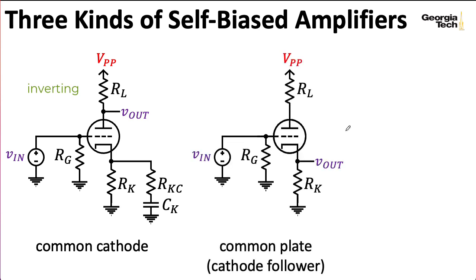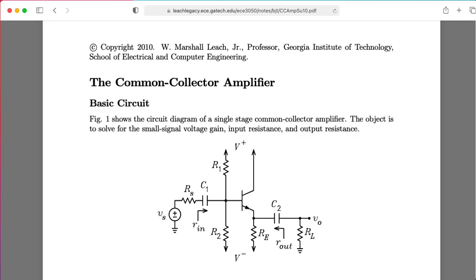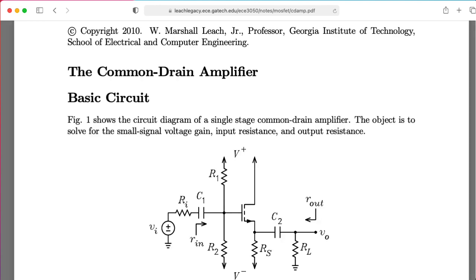The common plate configuration, on the other hand, doesn't give you a ton of gain. In fact, it doesn't really give you gain at all. It's going to give you a gain factor that's less than one, but it is non-inverting. The nice thing about it is that it has a very low output impedance, so this forms a nice voltage buffer, and hence often goes by the name cathode follower. So this is like an emitter follower in the BJT realm or a source follower in the MOSFET realm.